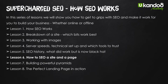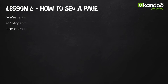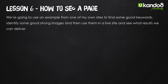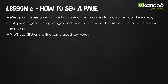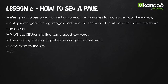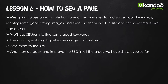Then lastly the perfect landing page in action. What we're going to do is use an example from one of my own sites to find some good keywords, identify strong images, use them on a live site, and see if we can actually deliver the results. I tend to use SEMrush for good keywords - it works really well. We'll go to an image library, get good images, add them to the site, and improve the SEO in all the areas we've covered. The good thing is it's a live example.